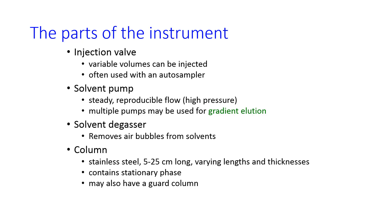And then we have the column. The columns are about 20 centimeters long, maybe a little longer, in contrast to GC columns, which are meters long. They contain a packed stationary phase. They may also have a guard column, which is shorter and not as good at separating things. The purpose of the guard column is to take out any big impurities that would damage the main column. And then finally, we have a detector.